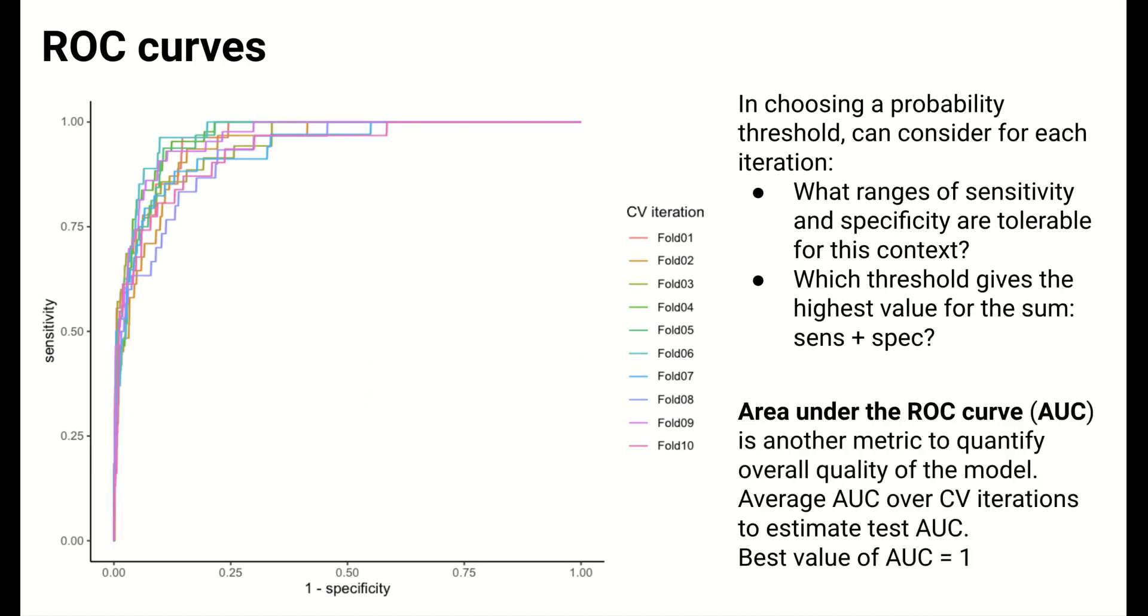Another way to use ROC curves across the cross-validation iterations is to compute a metric called the AUC, or the area under the ROC curve. It's worth pausing here to think about why this can capture the quality of a classification model and why higher AUC values indicate higher quality models. As you do think over this, also consider why the optimal AUC value is 1. As with any quantitative metric that can be computed from an iteration of cross-validation, we can average the AUCs across CV iterations to get an estimate of test or out-of-sample AUC.